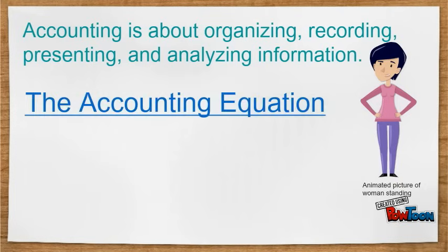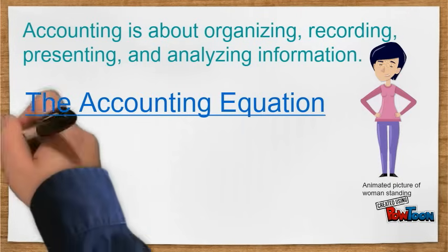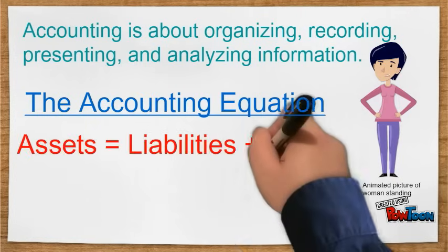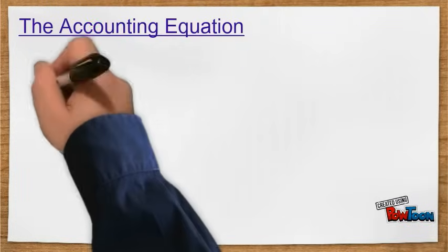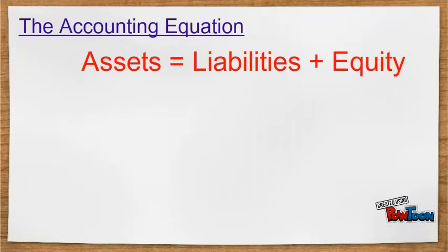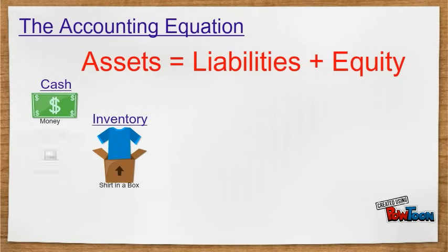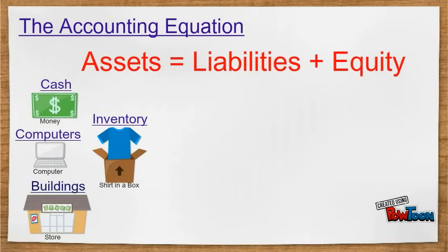We first start with the basic accounting equation, which is assets equals liabilities plus equity. Assets are the resources a company owns, such as cash, inventory, computers, and buildings.